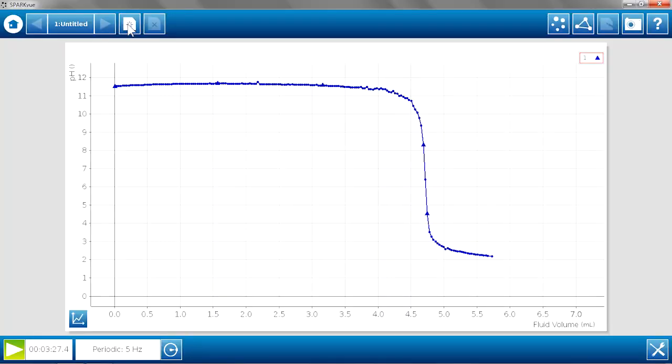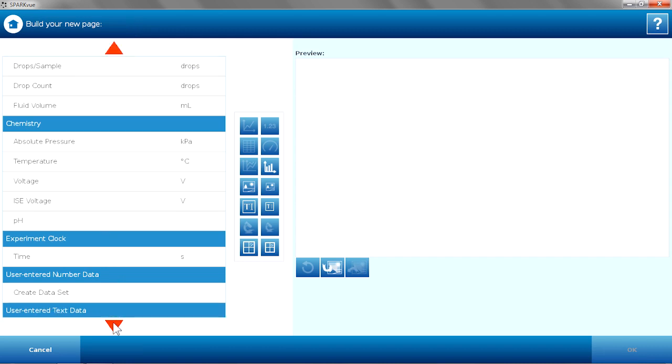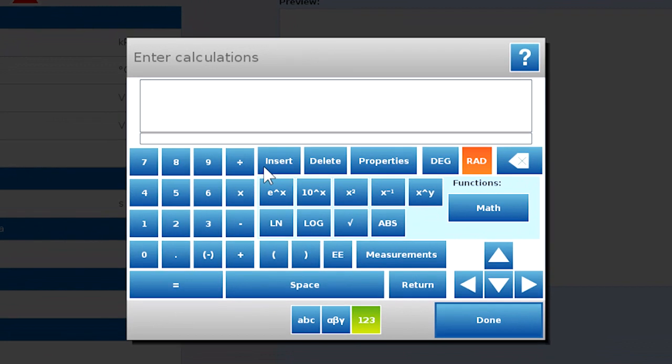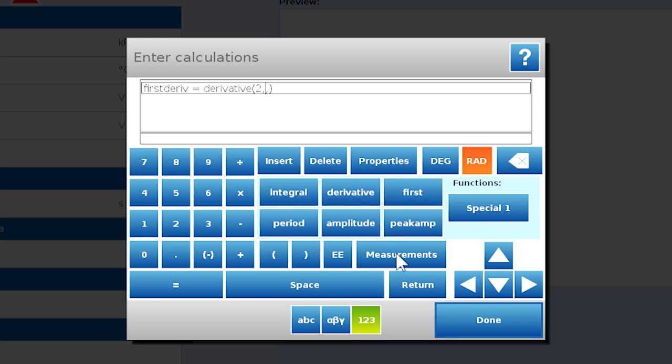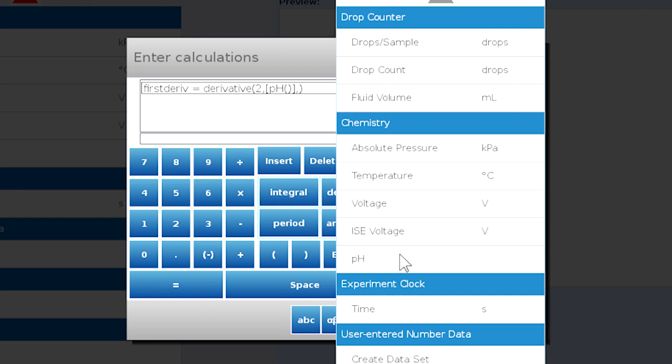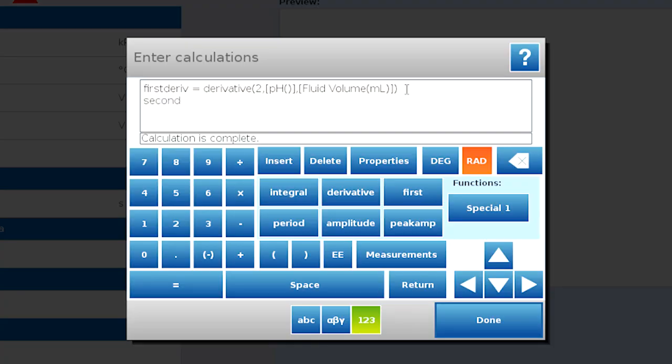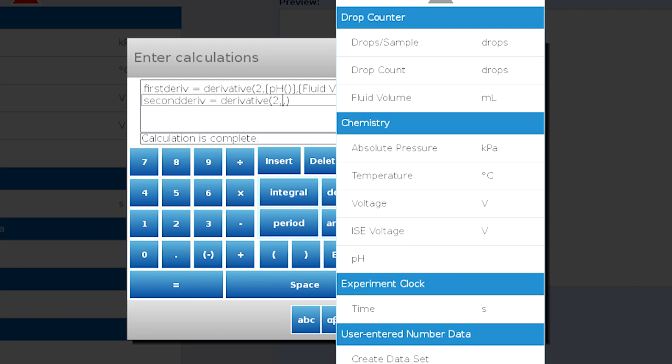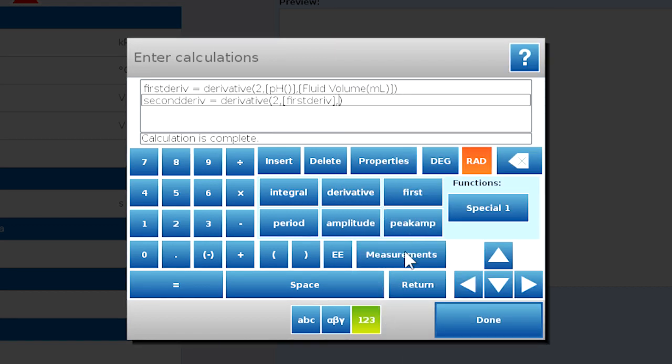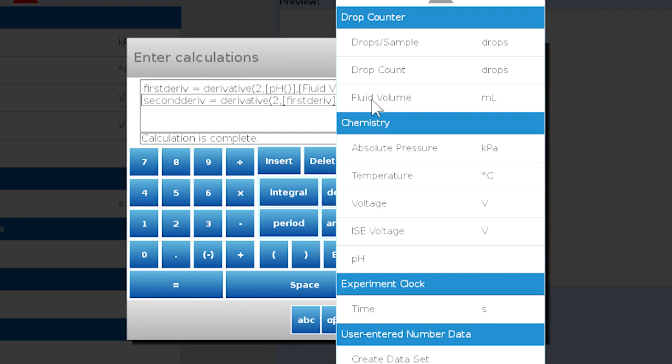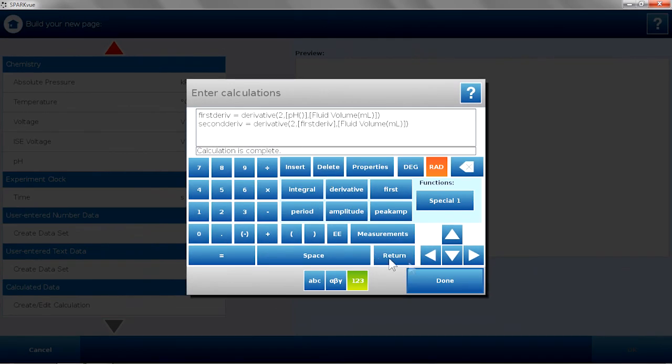One great way to analyze the titration is to look at the second derivative. So I'm actually going to build a new graph that includes the second derivative of the pH. I'm going to build a page, go to Calculated Data. And I'm going to do my first derivative with one of the math functions. And this is going to be a derivative of my measurement of pH versus fluid volume. And now I'm going to do my second derivative. And this is going to be a derivative of that first derivative versus fluid volume. And those calculations are complete. So we'll hit Done.